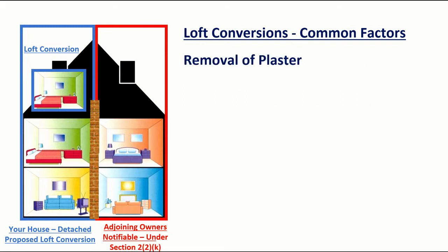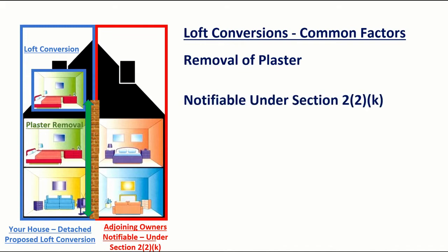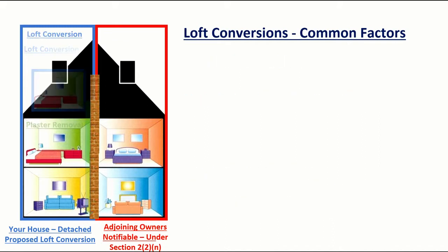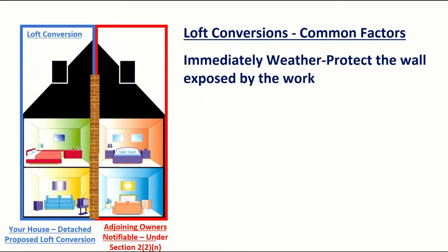Another piece of notifiable work may be the removal of plaster — where you've got a party wall and, because of the works being carried out, plaster may need to be removed during a refurbishment. It is also a good idea to notify the adjoining owners of weather protection to a party wall.